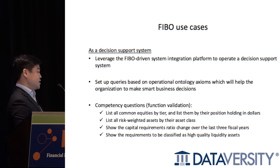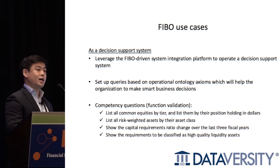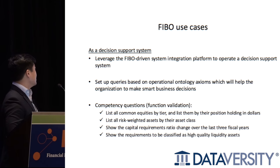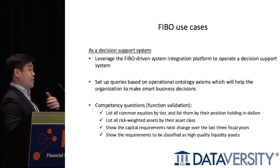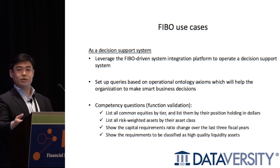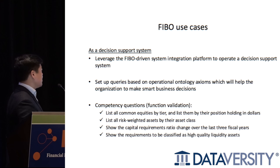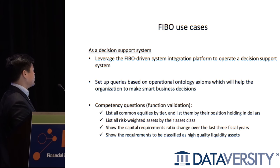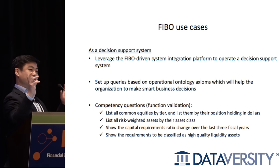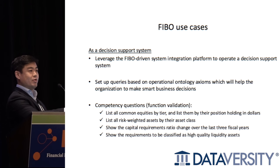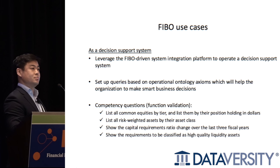The second use case of FIBO could be as a decision support system. Because FIBO is an ontology model, it has a unique strength in allowing users to get answers through ontology querying systems. This is really the main application area where industry players may want to leverage FIBO — they would be able to get answers to questions like: list all common equities by tier with position holdings in dollars; list all risk-weighted assets by asset class; show the capital requirement ratio change over the last three fiscal years; or show the requirements to be classified as high quality liquidity assets. Imagine having an internal Google-like search engine in your organization built on FIBO as the underlying technology.